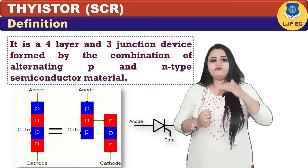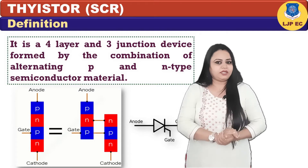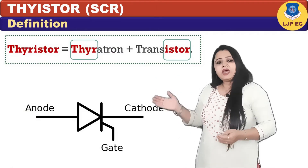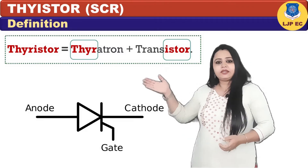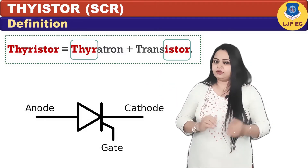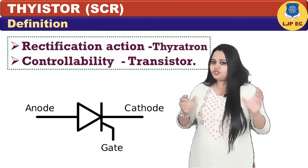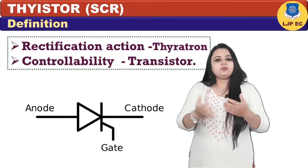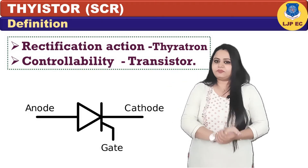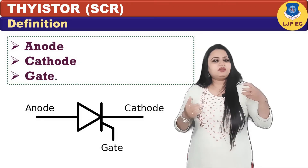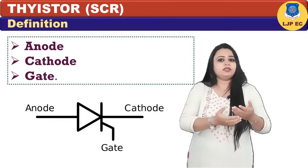It is a four-layered, three-junction device formed by a combination of alternating P and N type semiconductor material. Thyristor is a word formed by merger of thyrotron and transistor, as it exhibits rectification action of thyrotron as well as controllability of transistor. It is a three-terminal device, that is anode, cathode and gate.